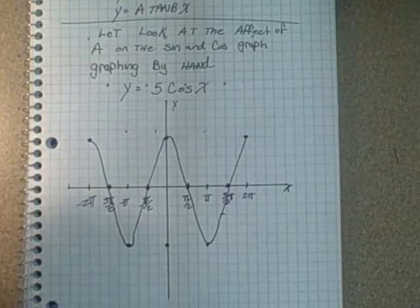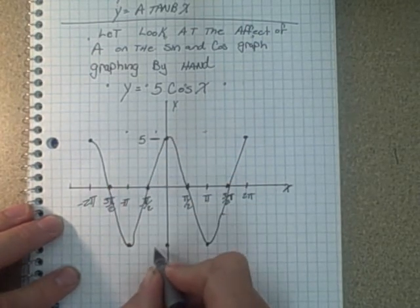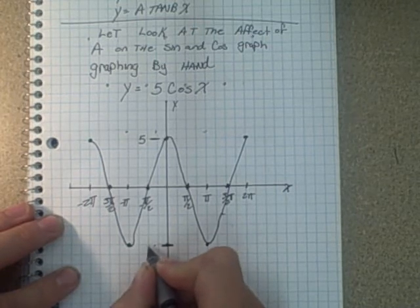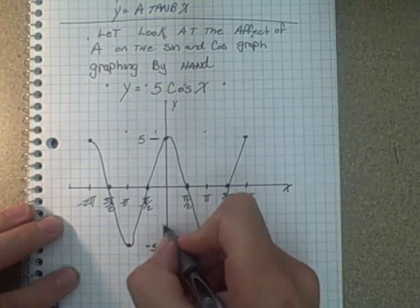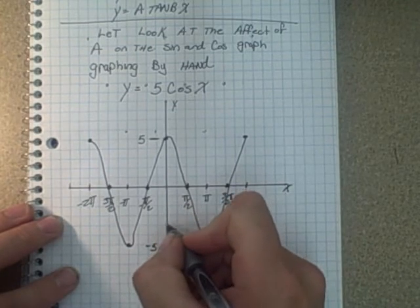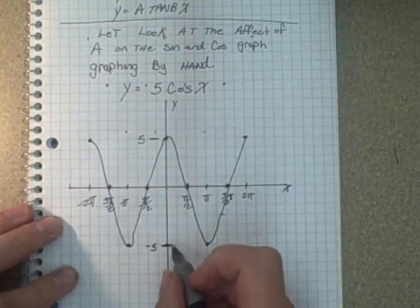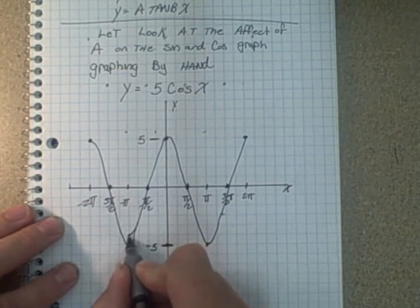Now all we need to do is, we know that this maximum is going to be 5, and this minimum is going to be negative 5. So then we can cut this into a regular one: 1, 2, 3, 4, 5. I should have had this one up here maybe.